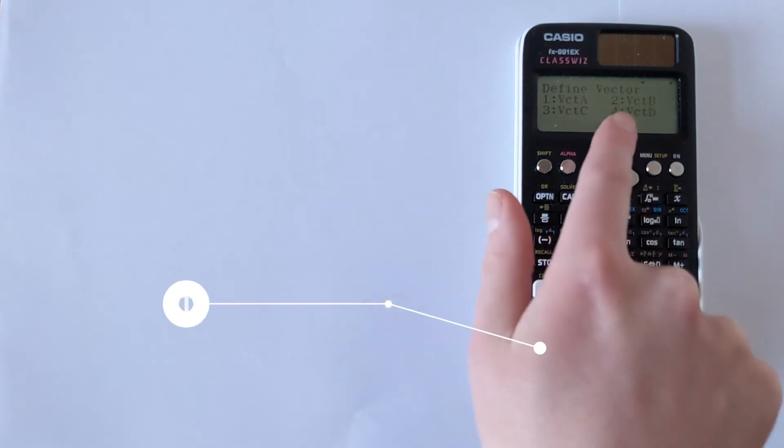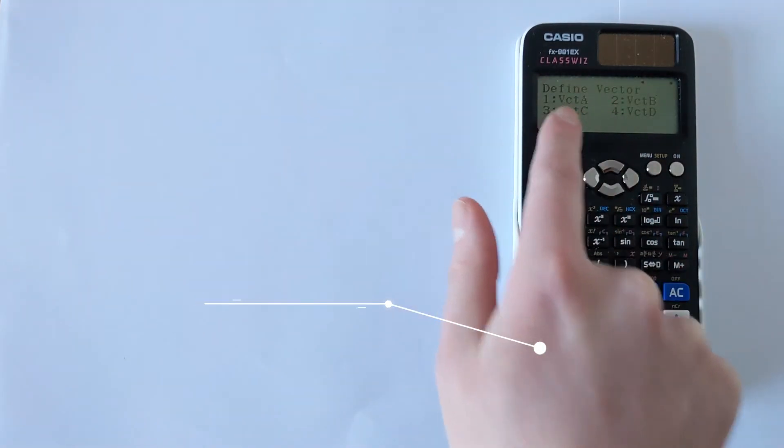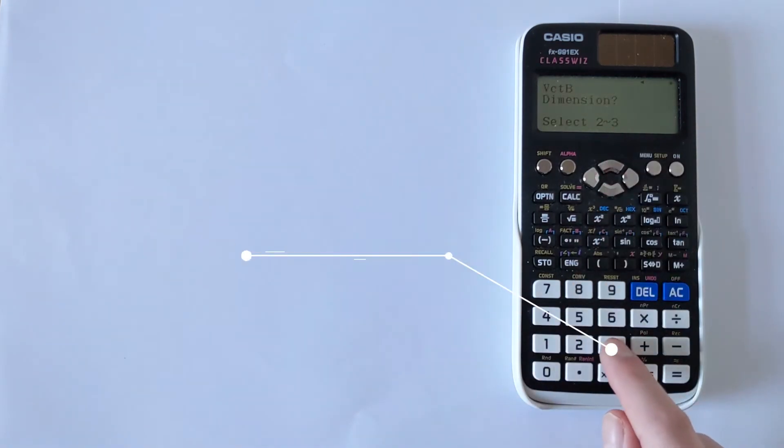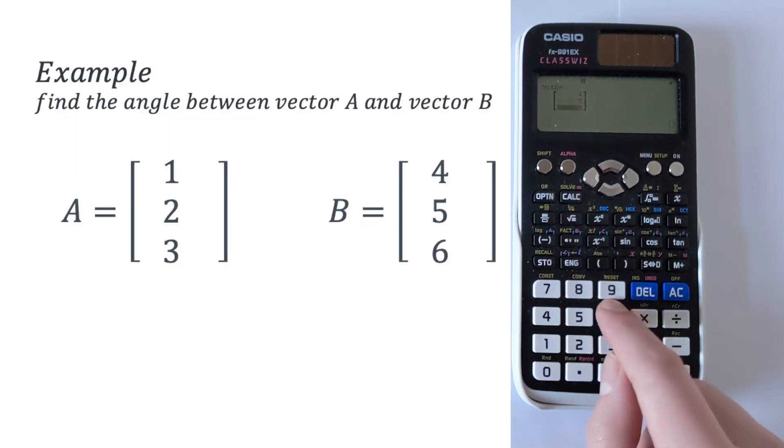Then you have to go back to define vector, so option 1. We want to input vector B, because we've already done vector A, so we want option 2. That brings us to this menu again. We need to say that it is of dimension 3. Then we can input it: 4 equals 5 equals 6 equals.